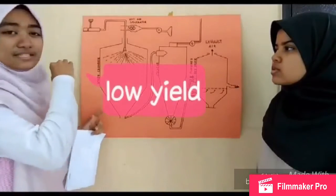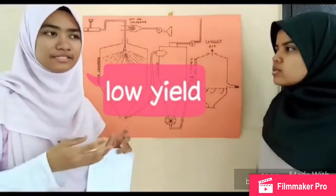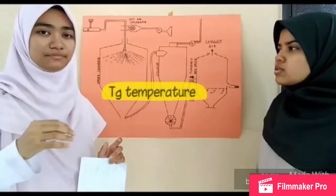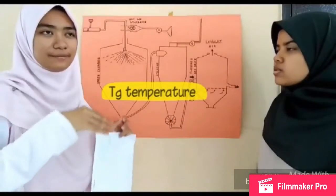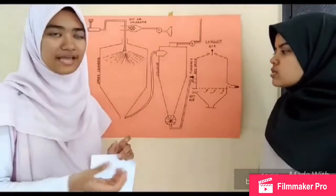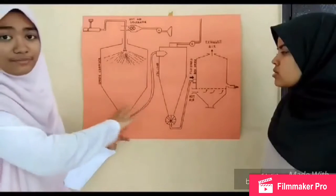The low yield problem occurs because the glass transition temperature for sour soup juice is low, which causes stickiness that forms clumps and sticks to the wall of the chamber during the drying process.